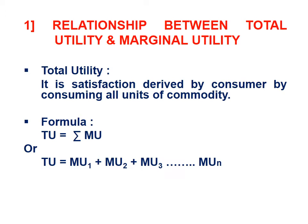Let us see the first concept: what is total utility. Total utility is the satisfaction derived by a consumer by consuming all units of a commodity within a given period of time. In other words, it is the sum of all utilities derived by the consumer within a given period of time.